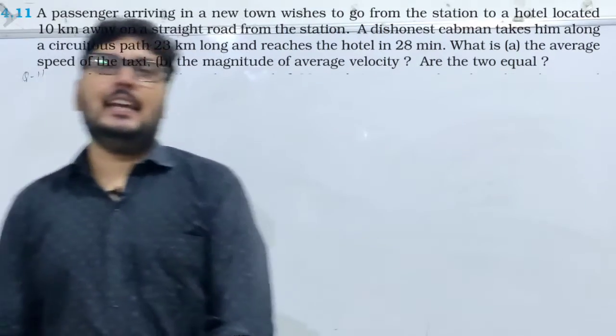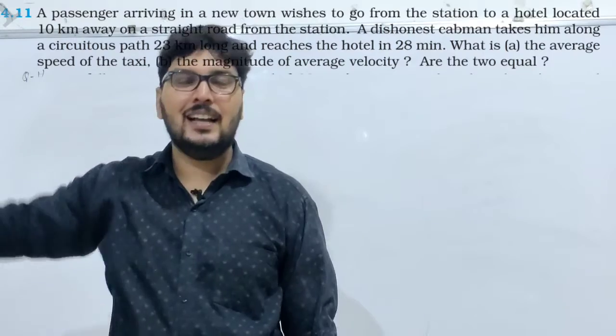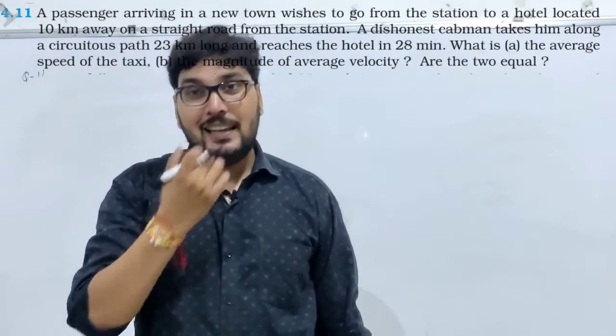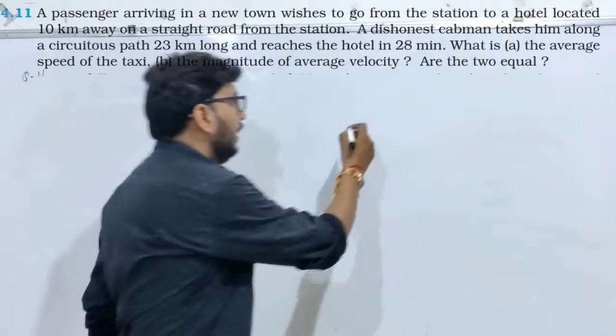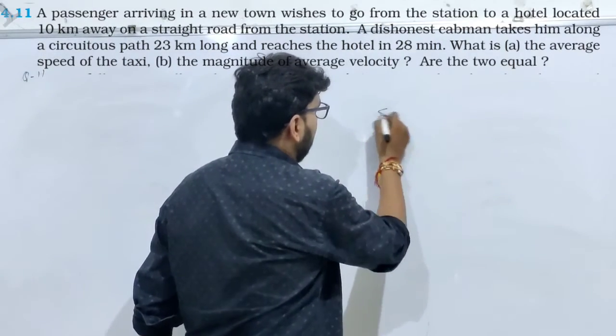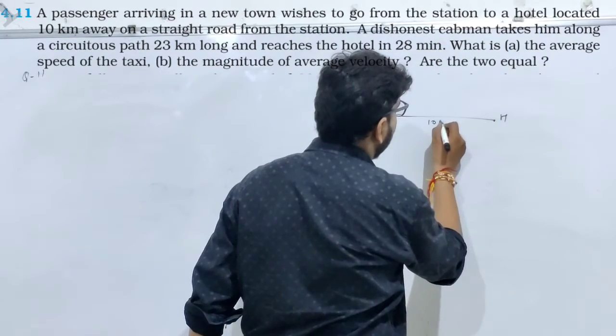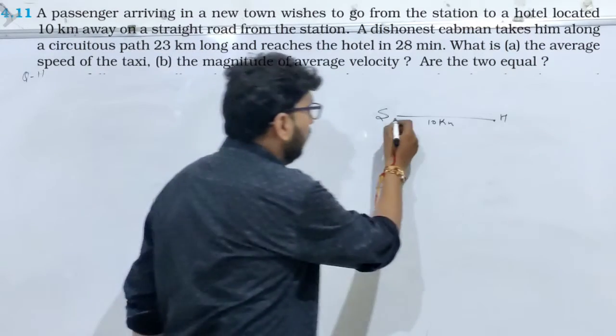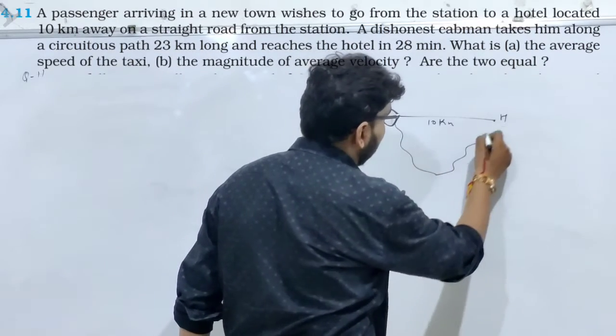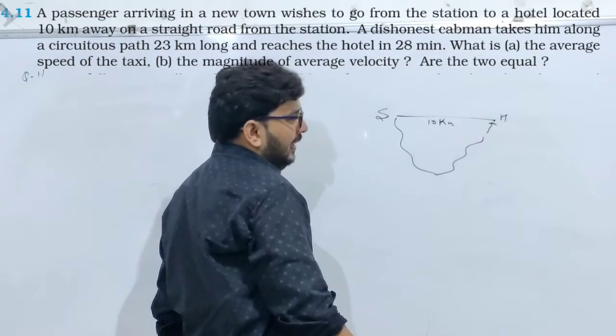Question कहता है कि एक कोई भी person था वो station से बाहर निकला, hotel जाना था. लेकिन एक taxi में बैठ गए. अब taxi वाले means hotel, station और hotel के बीच का जो distance था, it was 10 kilometers. Taxi में बैठे, taxi वाले भाई साब ने इनको उल्टे सीधे रास्ते पर घुमाया और यहाँ पहुंचा दिया, meter का bill बढ़ाने के लिए.